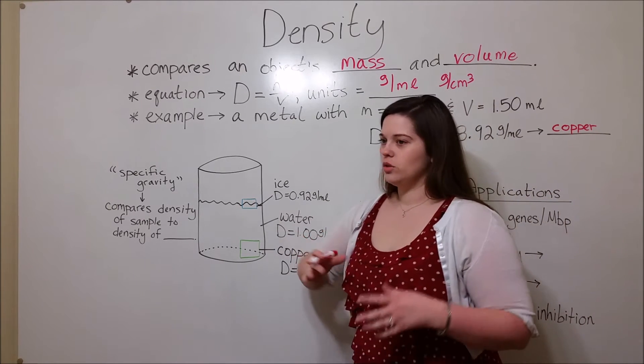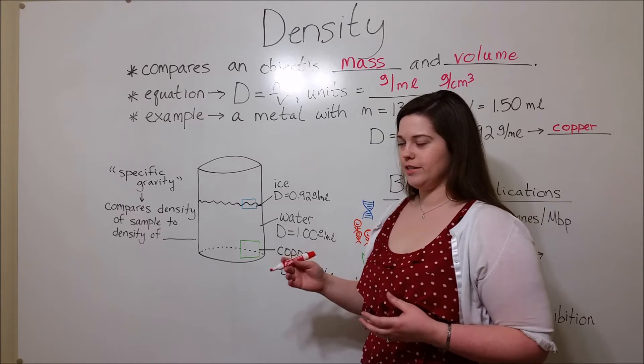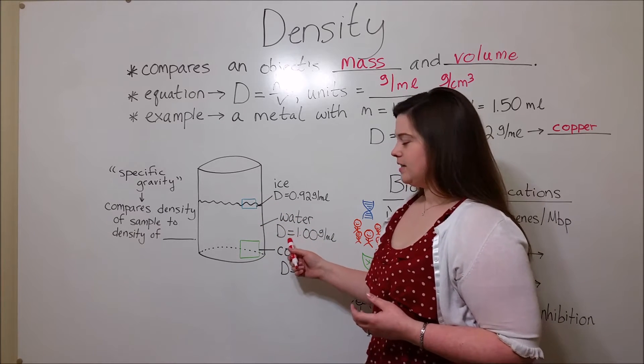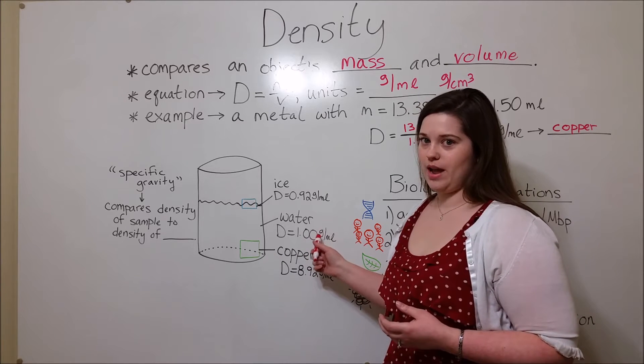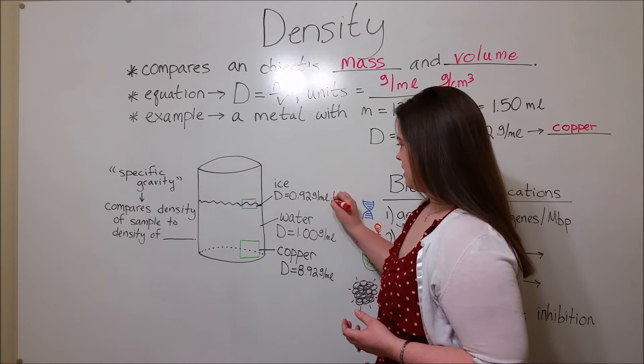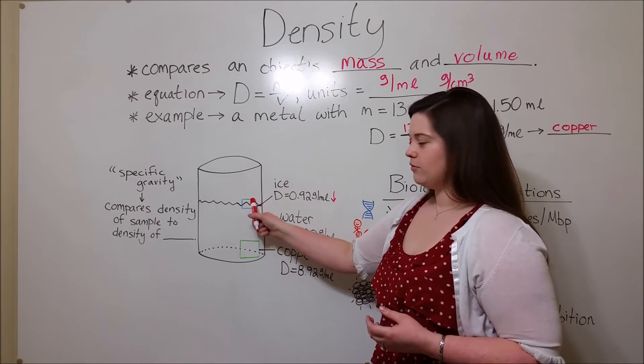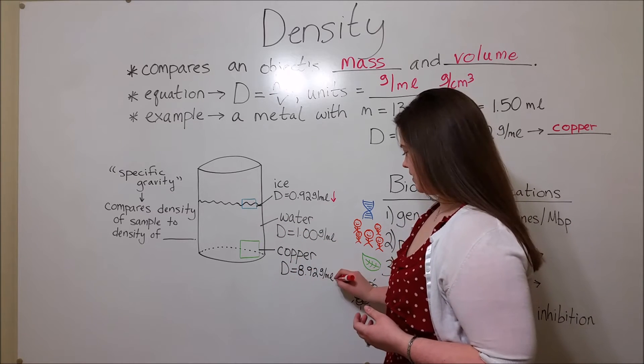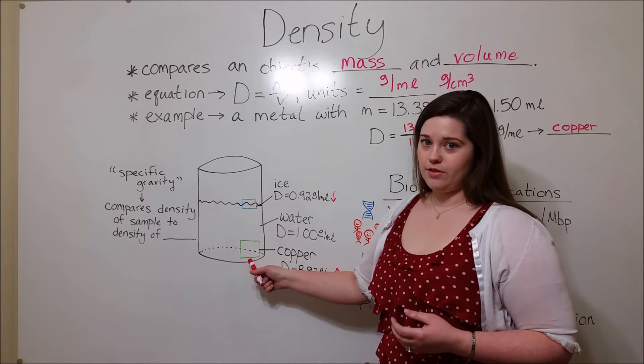You can also look at densities to compare different objects. For example, let's say that you have a beaker full of water. The density of water is 1.00 grams per milliliter. Ice has a lower density at 0.92 grams per milliliter. That's why ice can float on water. Something like copper, on the other hand, with a density that is higher than that of water, will sink to the bottom of the beaker.